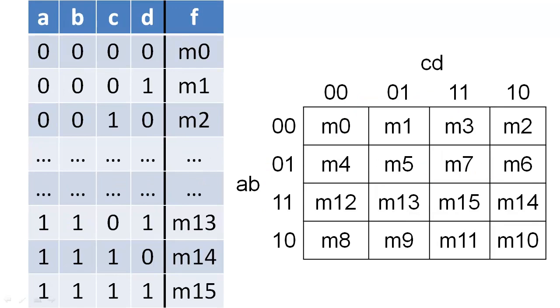When we expand a K-map to four variables, we similarly order the rows so that each cell differs by only one variable from its adjacent cells.